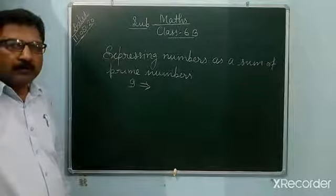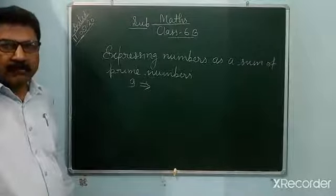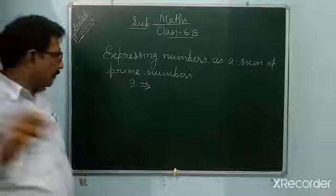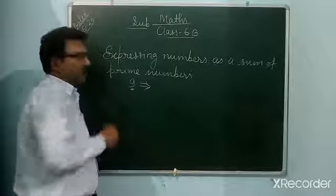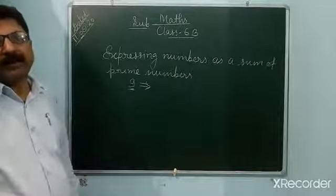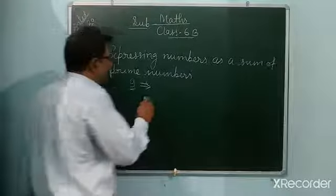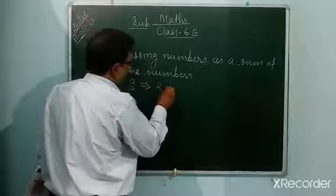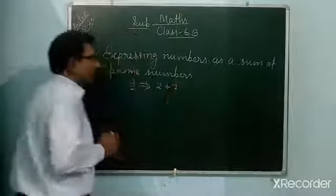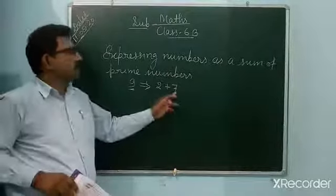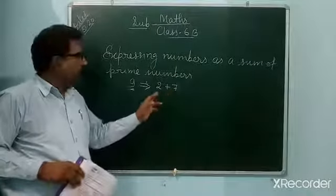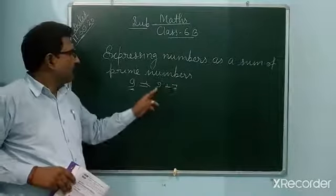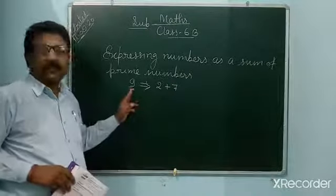You choose numbers such that if you take their sum, the result equals the given number, and those numbers must be prime numbers. For example, 2 plus 7 equals 9. Here, 2 is also a prime number and 7 is also a prime number. So like this, you can represent 9 as a sum of prime numbers.